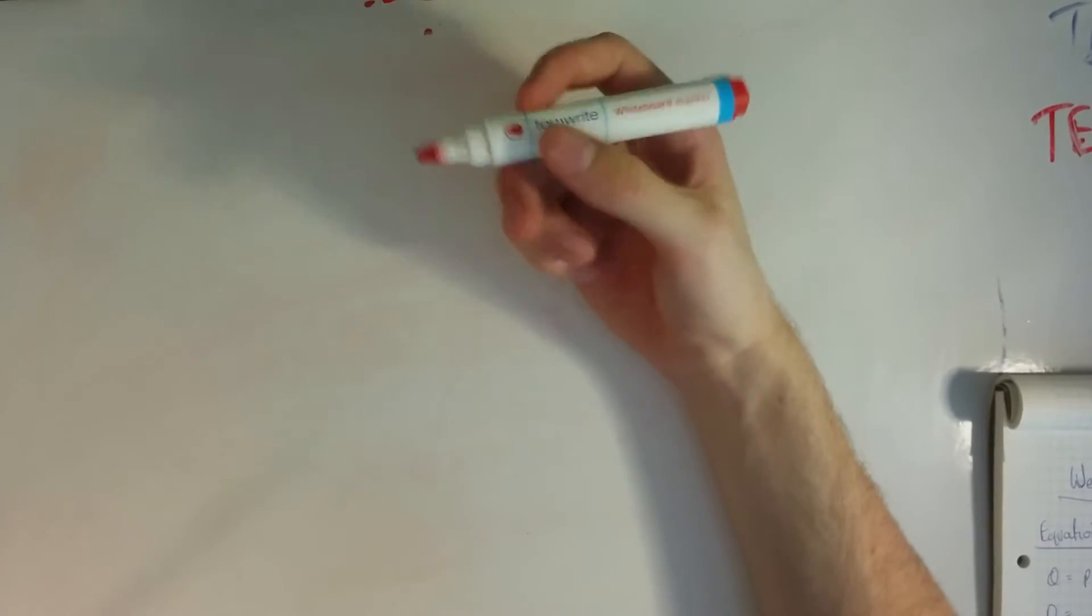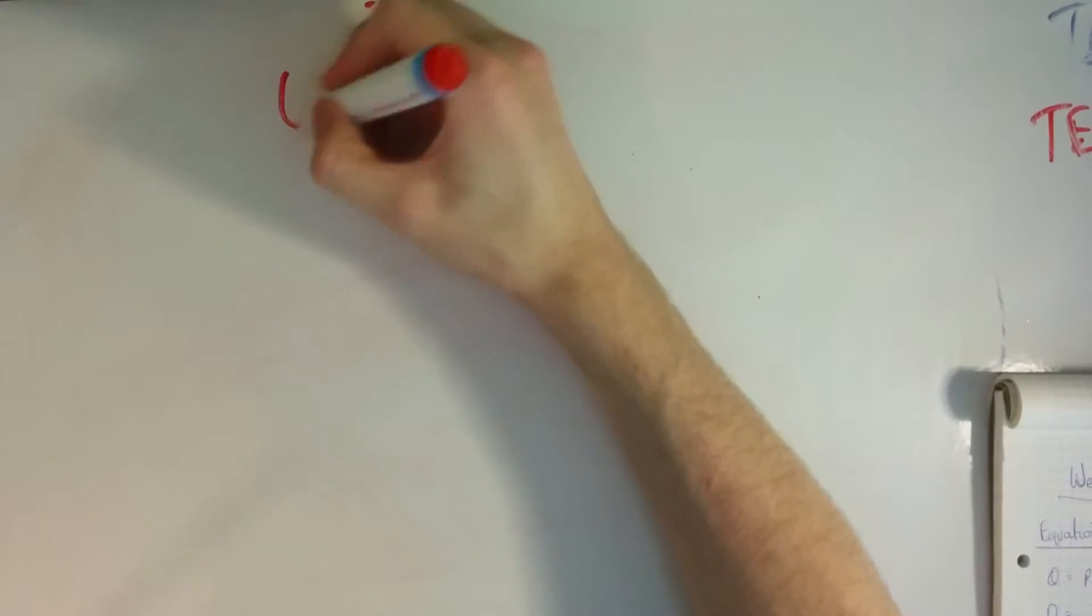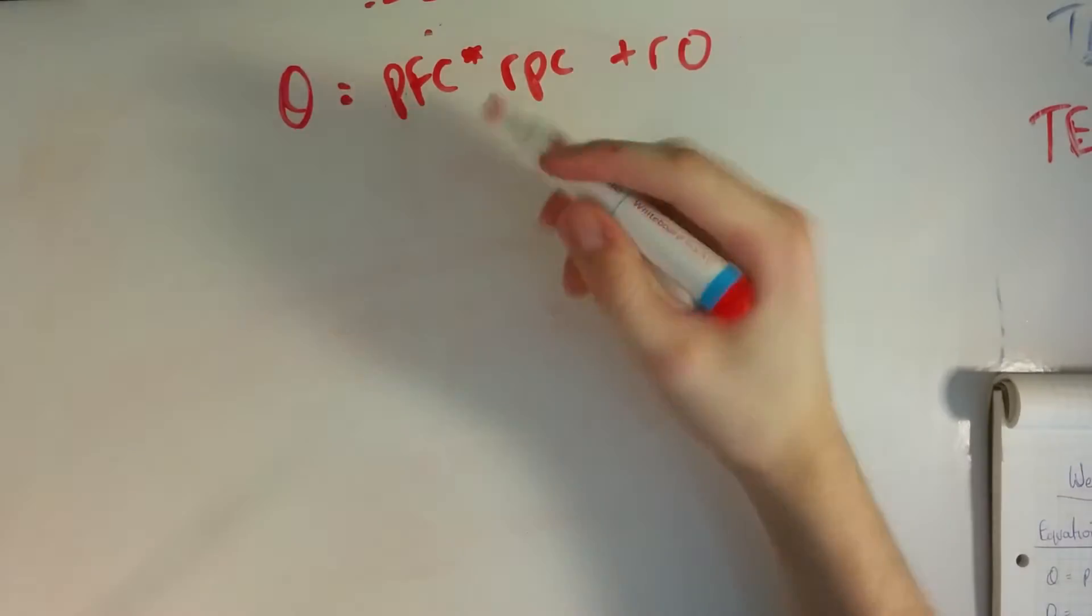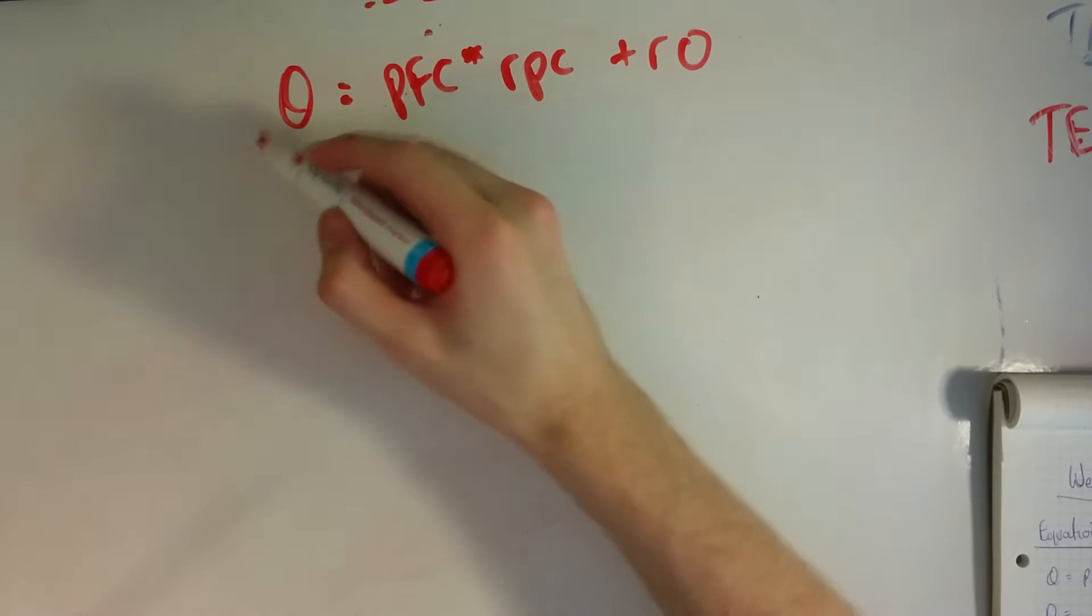So why do we just do that? Why get the measuring tape and why get the pfc values for each distance? It all comes back to this equation where theta equals pfc times rpc plus r0.